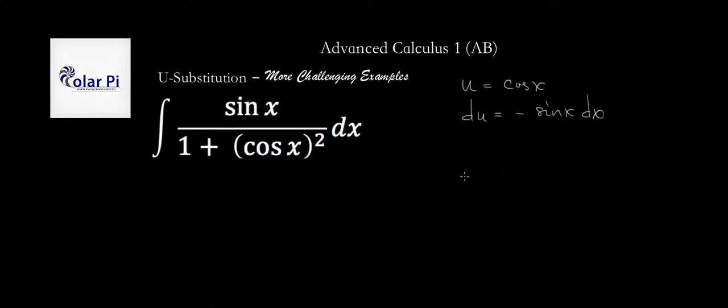So then, why am I betraying my advice in the last example about including constants? Well, because here, there's no way to include the constant 1 without also including the cosine squared.